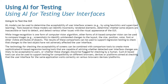Continuing ahead, the second segment is using AI to test the GUI itself. ML models can be used to determine the acceptability of user interface screens — for example by using heuristics or supervised learning. Tools based on these models can identify incorrectly rendered elements, determine whether objects are inaccessible or hard to detect, and detect various other issues with the visual appearance of the GUI. This is helpful because sometimes static objects on screen may not be accessible, detectable by properties, or interactable, and AI can help identify those objects and determine ways to interact with them.